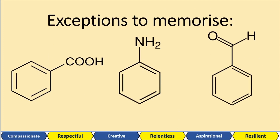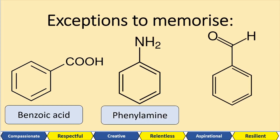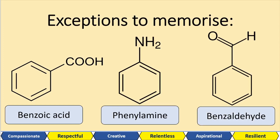There are some exceptions you have to memorize — only three. First, we've got benzoic acid — a carboxylic group attached directly to the benzene ring. When we have an amine group, the amine group takes priority, and so when benzene is actually the substituent, it turns from benzene to phenyl — so this is phenylamine. And then here we've got benzaldehyde — it's an aldehyde because it's a carbonyl group with a hydrogen bonded on the other side.